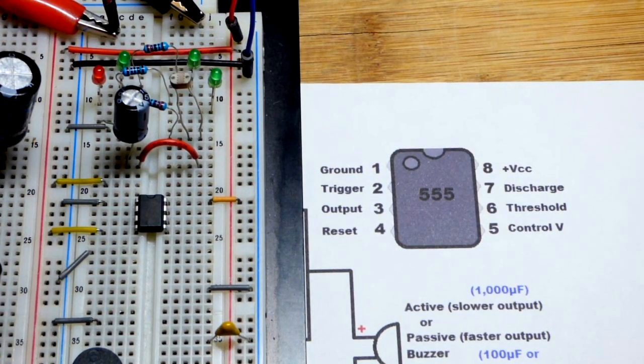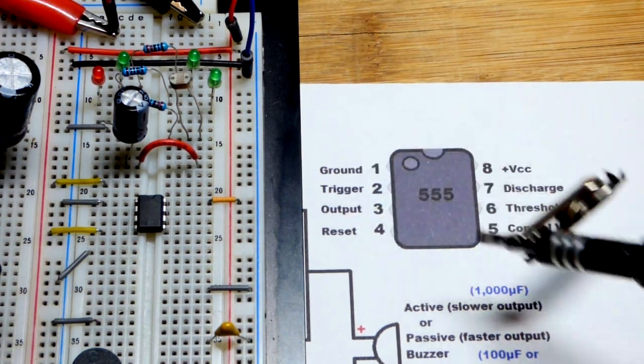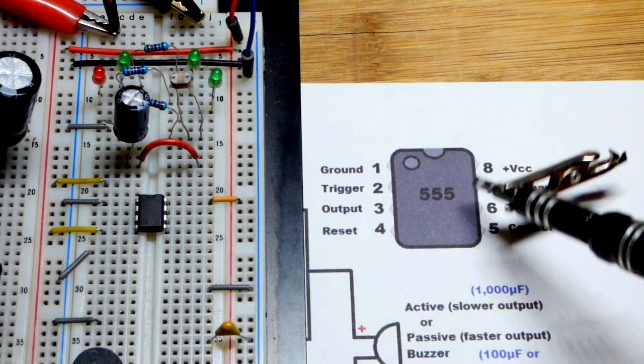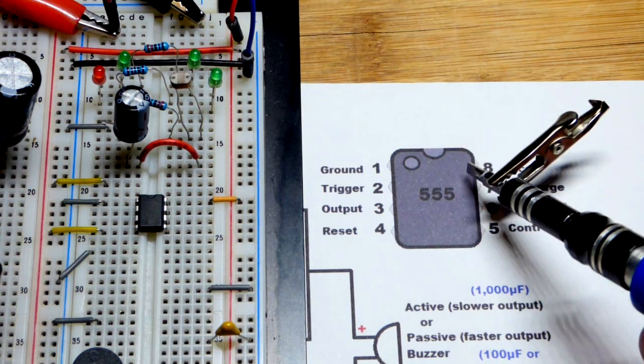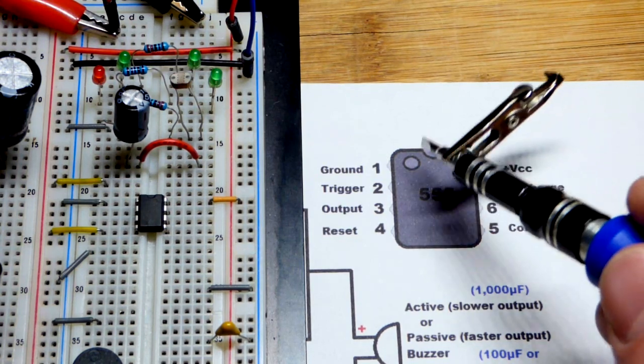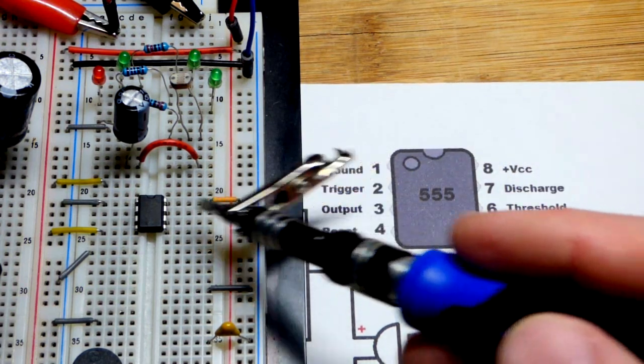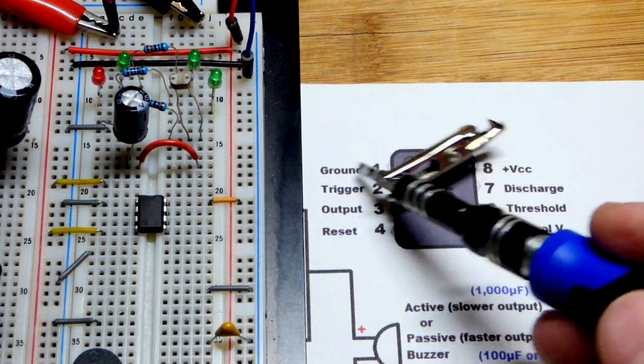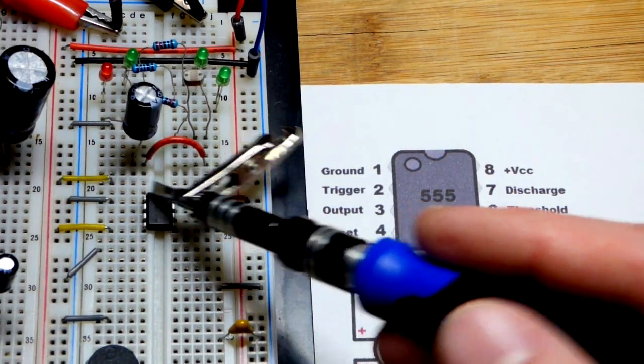So now to begin with the 555 timer, we have to power it. It also sets the 1/3 and 2/3 supply voltage. There's three resistors in there basically of equal value, and so you tap into 1/3, 2/3. But in any case, positive supply goes to pin 8, and then the negative supply ground, our 0 volt reference point, goes to pin number 1.